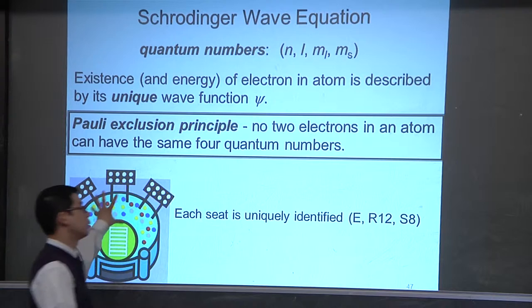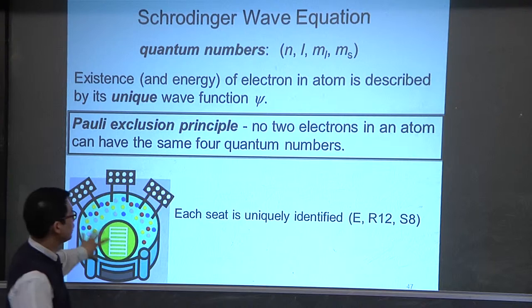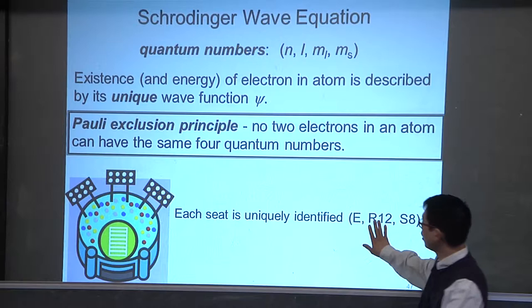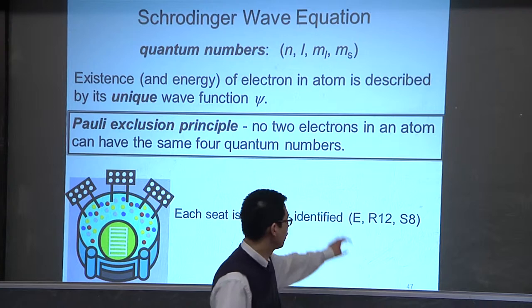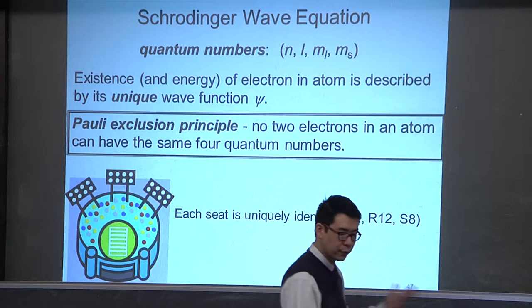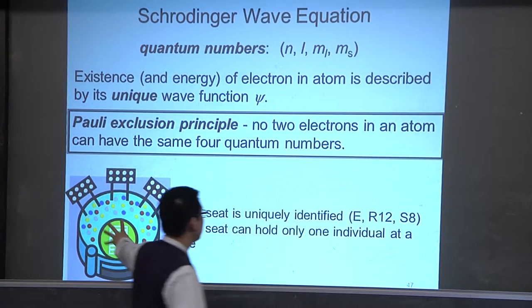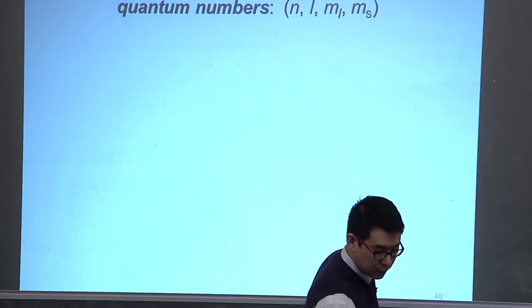We drew the parallel to visiting a stadium. The stadium is like your atom. Within the atom you have a section, a row, and a seat. Each quantum number gives a little more specificity to your electron and specifically to its energy. Each seat can only hold one individual at a time.